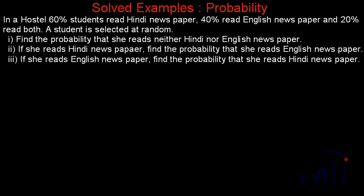A student is selected at random. First, we have to find the probability that she reads neither Hindi nor English newspaper. Second, if she reads a Hindi newspaper, we have to find the probability that she reads English newspaper also. And in the third part, if she reads English newspaper, we have to find the probability that she reads Hindi newspaper also.